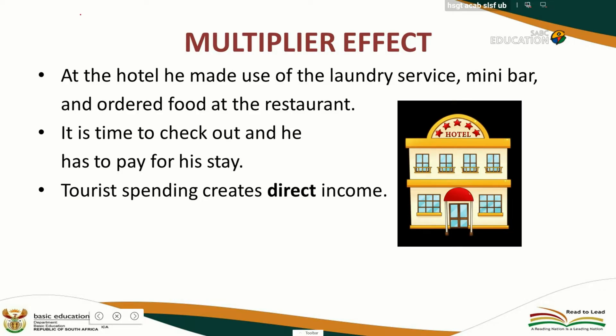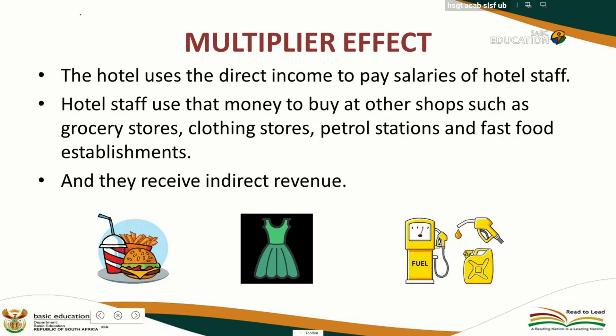This means the tourist is spending directly at the hotel. Bartenders, restaurant staff, and laundry services need to receive a salary. They use that salary to buy groceries, clothes, pay for transport, and buy fast food. So the local community is also benefiting — this is indirect revenue.